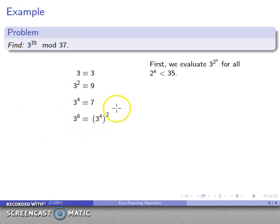So next step, 3 to the 8th. That's the previous one squared. That's 7 squared. That's 49. Knock down mod 37 to 12. And again, 3 to the 16, 12 squared, 144. Knock down mod 37 down to 33. 3 to the 32nd, 3 to the 16 squared, 33 squared, 1089. Knock down to 16.